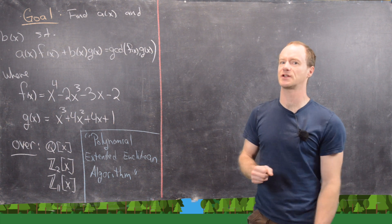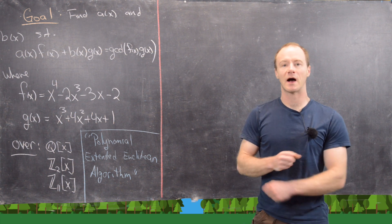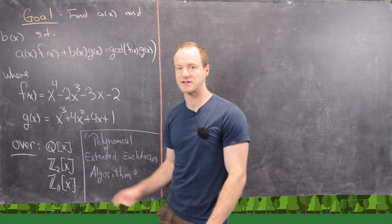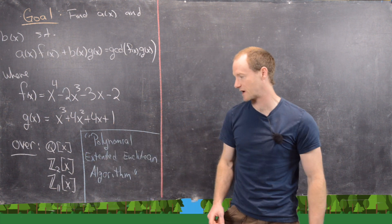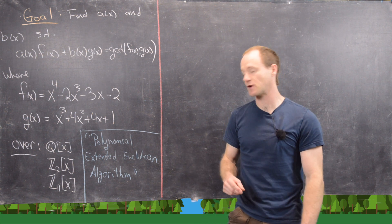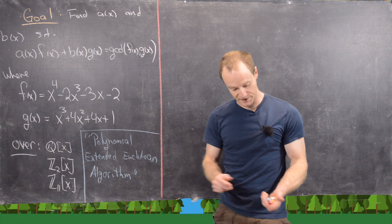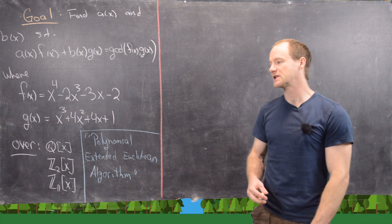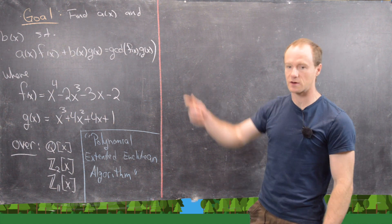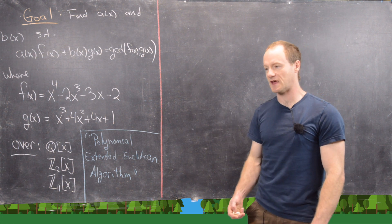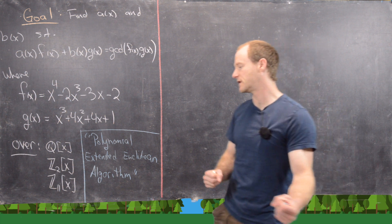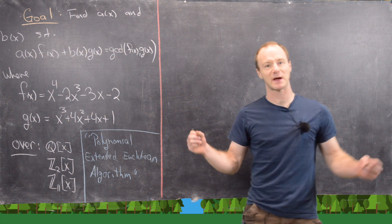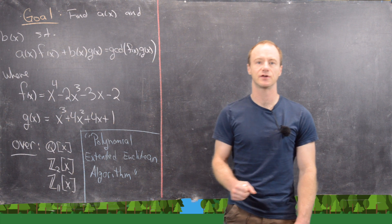You might ask what's special about 2 and 11 other than being prime. It turns out that for many small primes you get the same answer in Z_p adjoined x as in Q adjoined x, but for 2 and 11 you get something slightly different, which is interesting. Also, this is not a super fun process but it does build character, and it's interesting to notice that polynomials over a field look more and more like the integers.